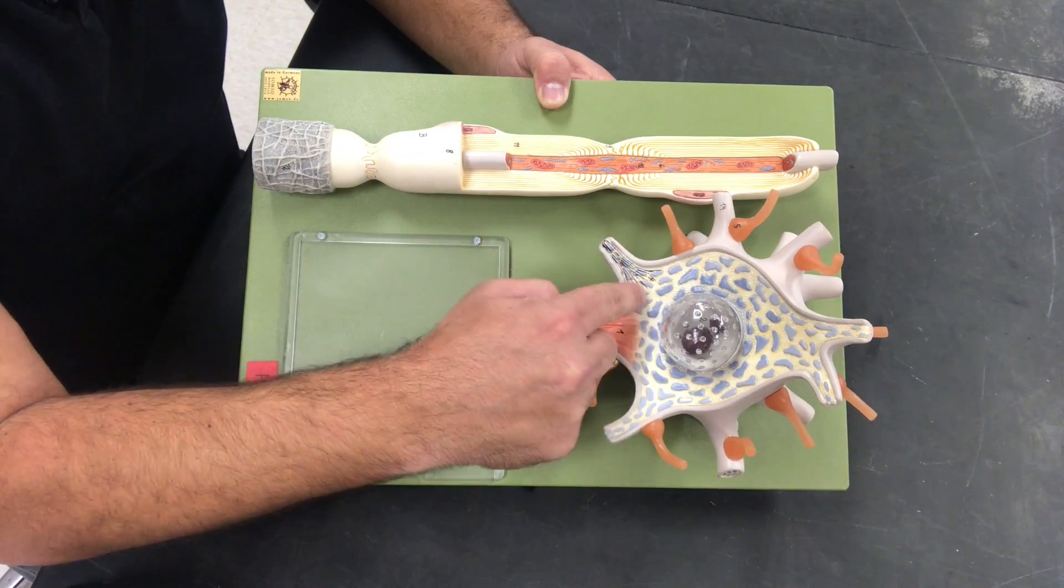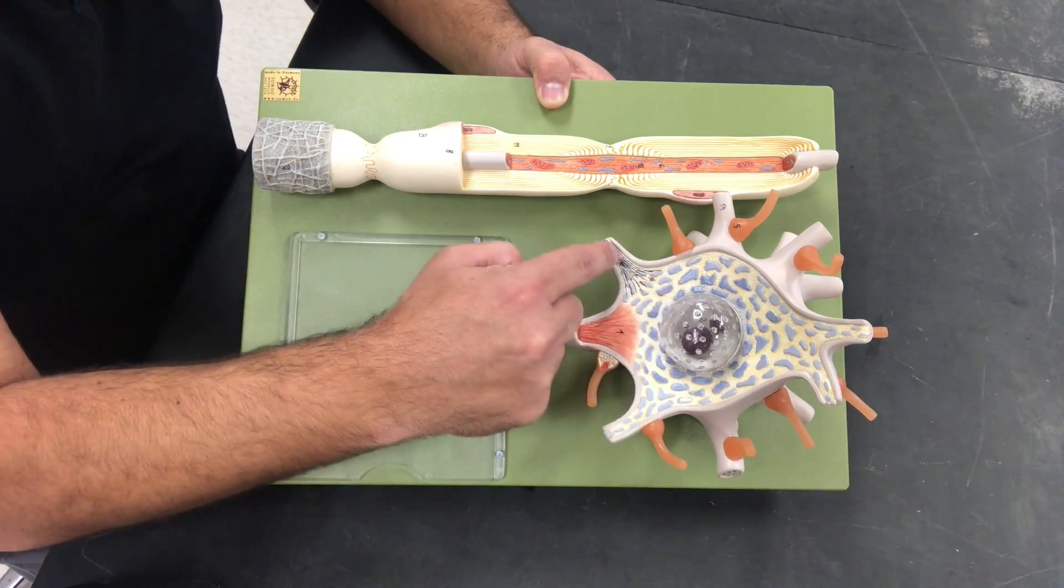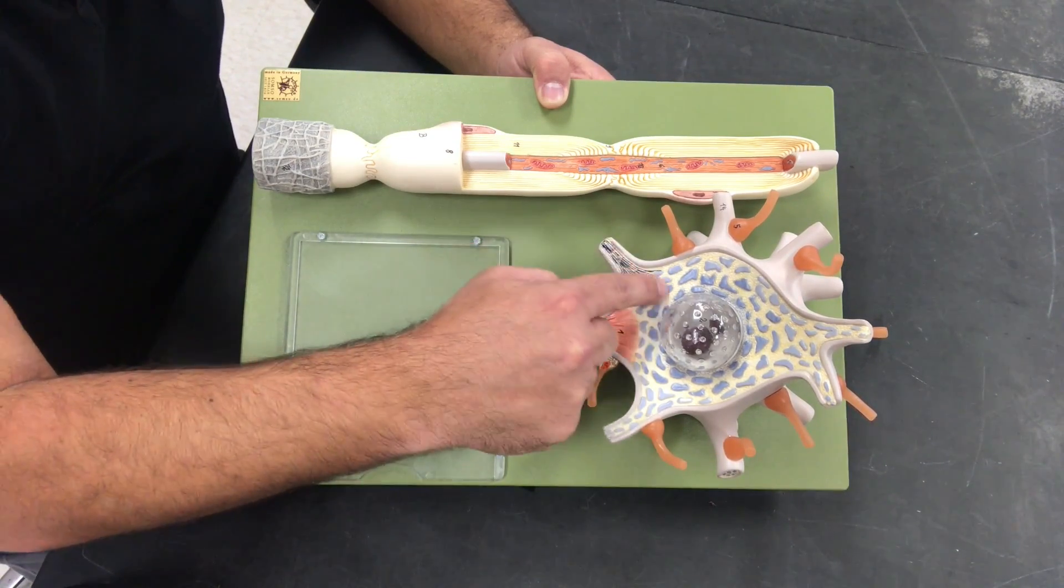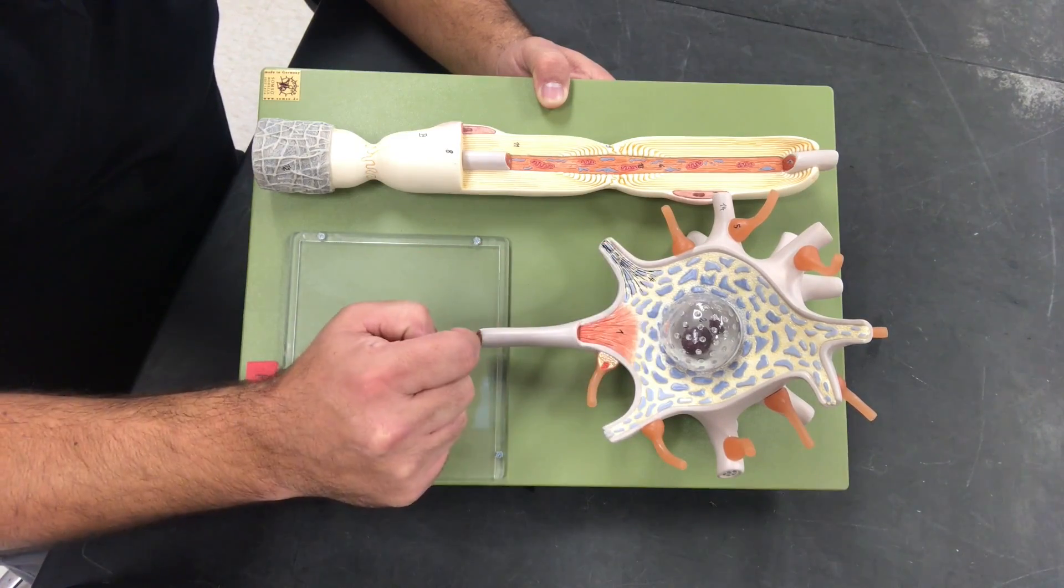You can see the neurofibrils extending into the dendrites.